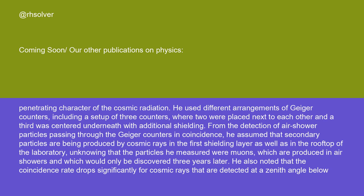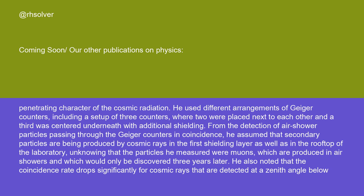From the detection of air shower particles passing through the Geiger counters in coincidence, he assumed that secondary particles are being produced by cosmic rays in the first shielding layer as well as in the rooftop of the laboratory, unknowing that the particles he measured were muons, which are produced in air showers and which would only be discovered three years later. He also noted that the coincidence rate drops significantly for cosmic rays that are detected at a zenith angle below 60 degrees.